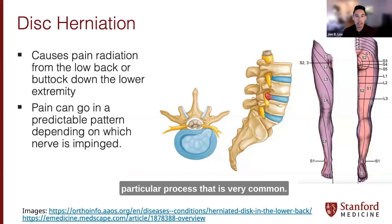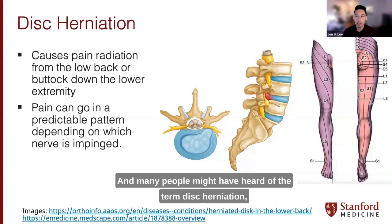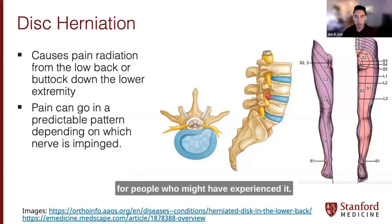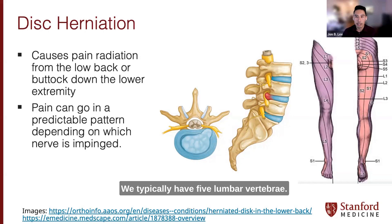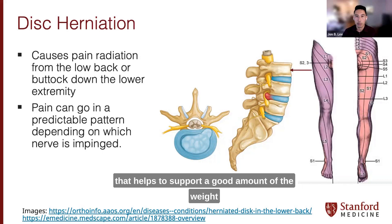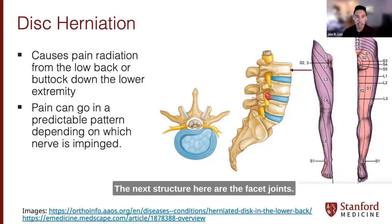I want to talk about disc herniation — a process that is very common. People will often say 'I popped my disc,' and it can be quite painful. We typically have five lumbar vertebrae, each separated by a cartilaginous disc. The first arrow points to our vertebral body — the bony segment of our spine that helps support the weight of our trunk and upper extremities and head.